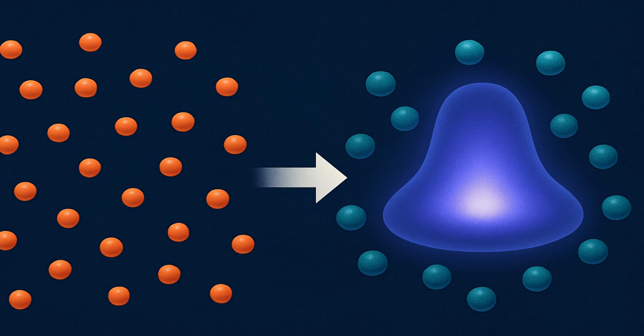In short, the Bose-Einstein condensate is a mysterious state of matter where atoms, when cooled near absolute zero, lose their individuality and behave like one giant quantum wave. This helps scientists explore the quantum world on a visible scale and might open doors to super tech in the future.